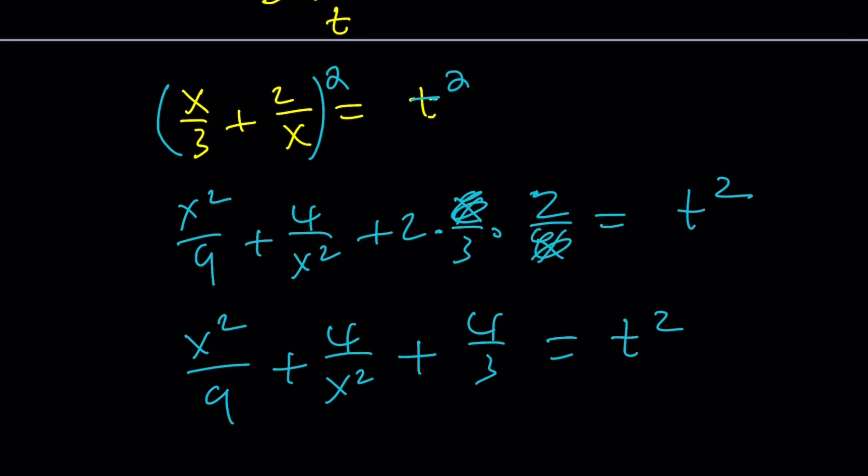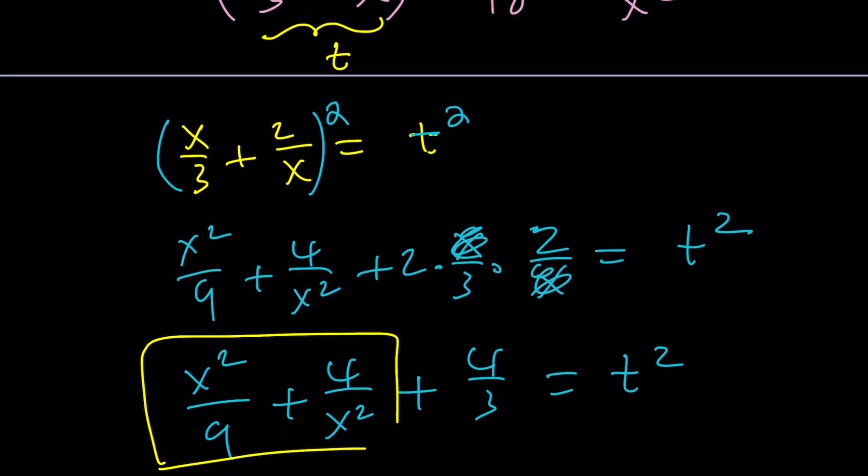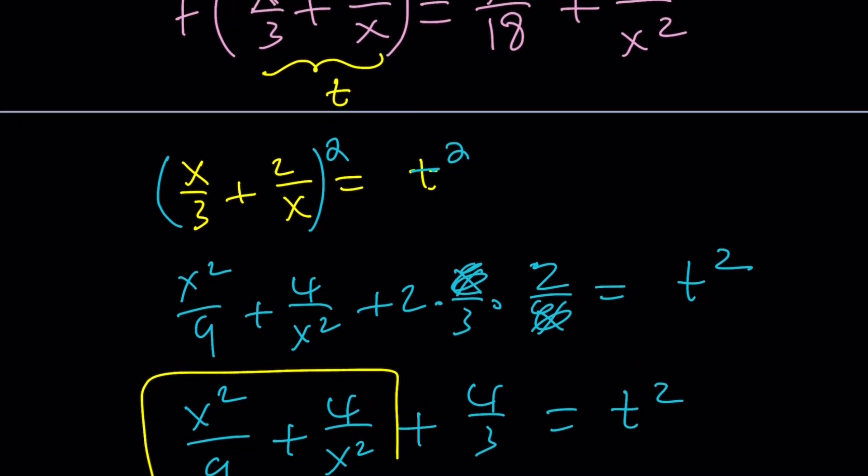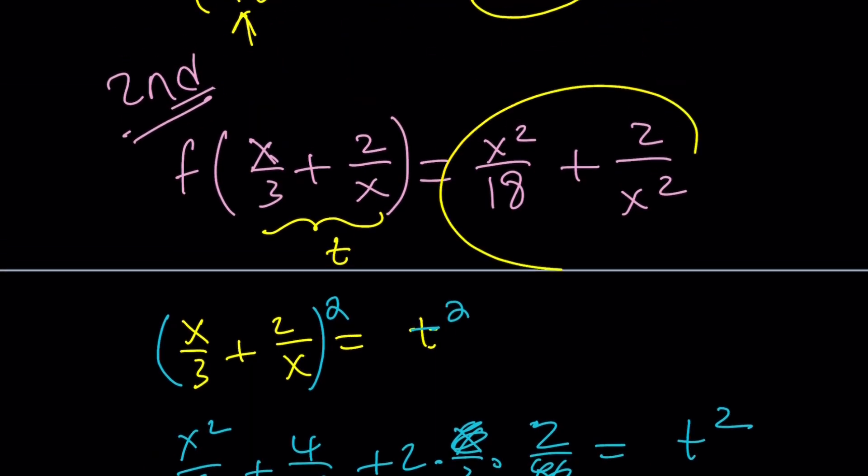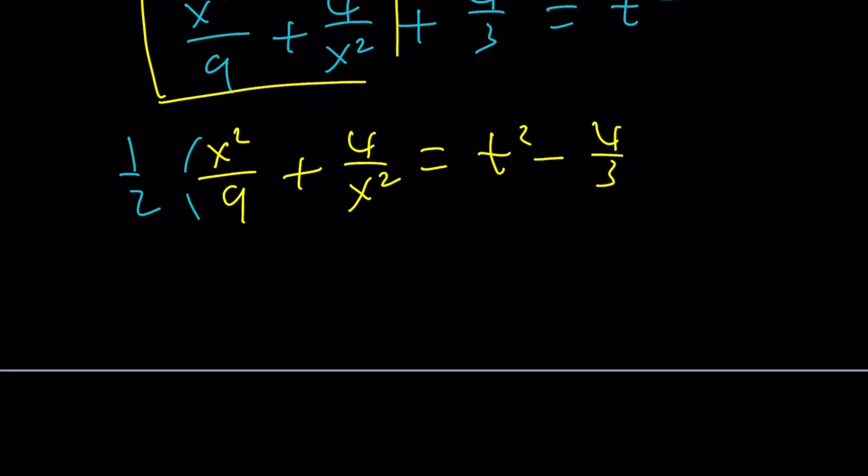So here's what I notice. If I take this expression, that's how I came up with the problem. So that's kind of like, give you an idea. If I multiply this by 1 half, I'm going to get this. Isn't that beautiful? That's how this problem came about. So here's what I'm going to do. I'm going to isolate this. t squared minus 4 thirds. And then I will multiply both sides by 1 half. And obviously, you can do it. It's valid, right? And then this is going to give me x squared over 18 plus 2 over x squared equals 1 half of t squared. You can obviously write this as t squared over 2 minus 2 thirds.